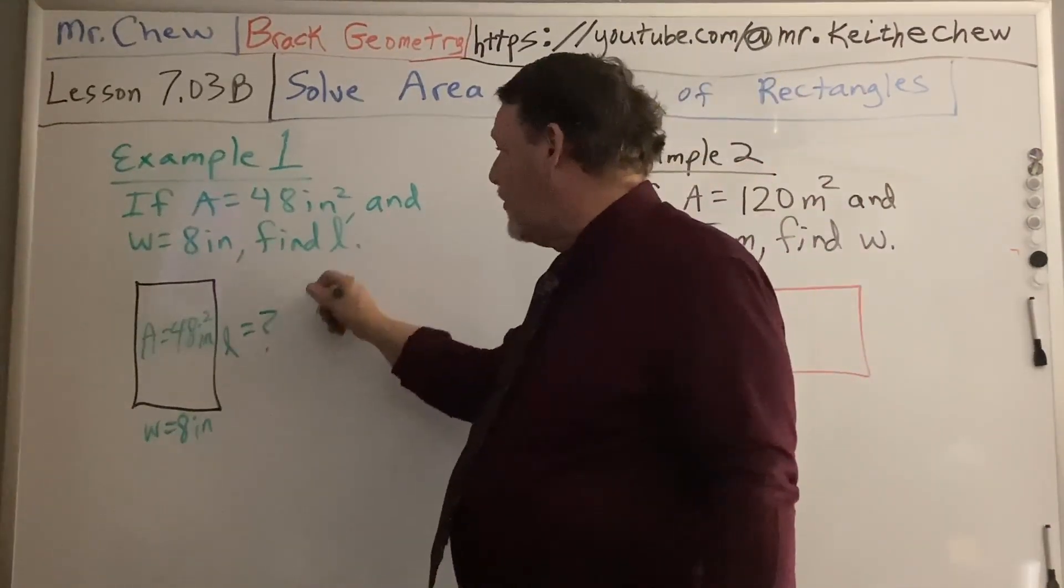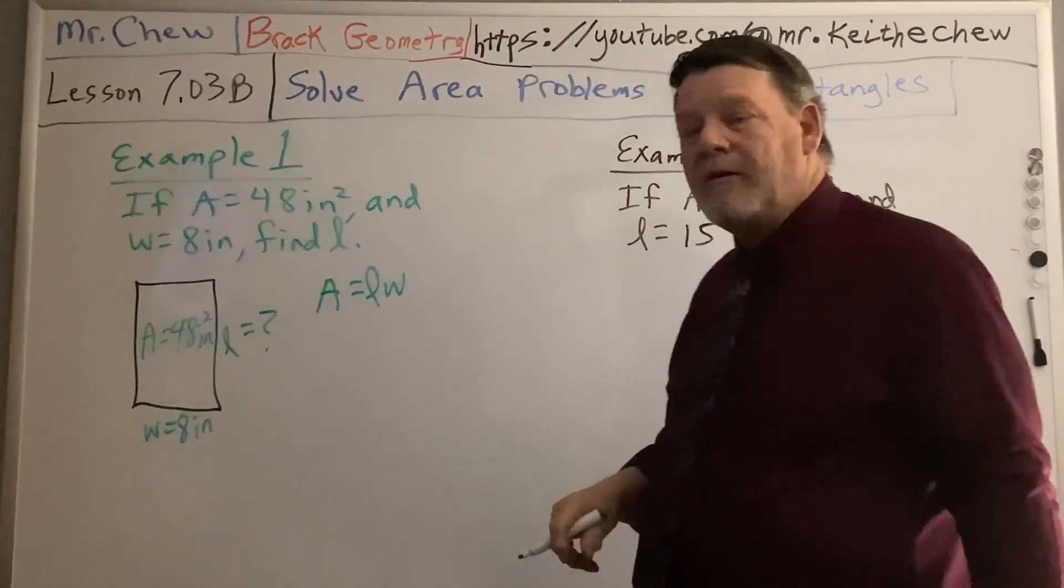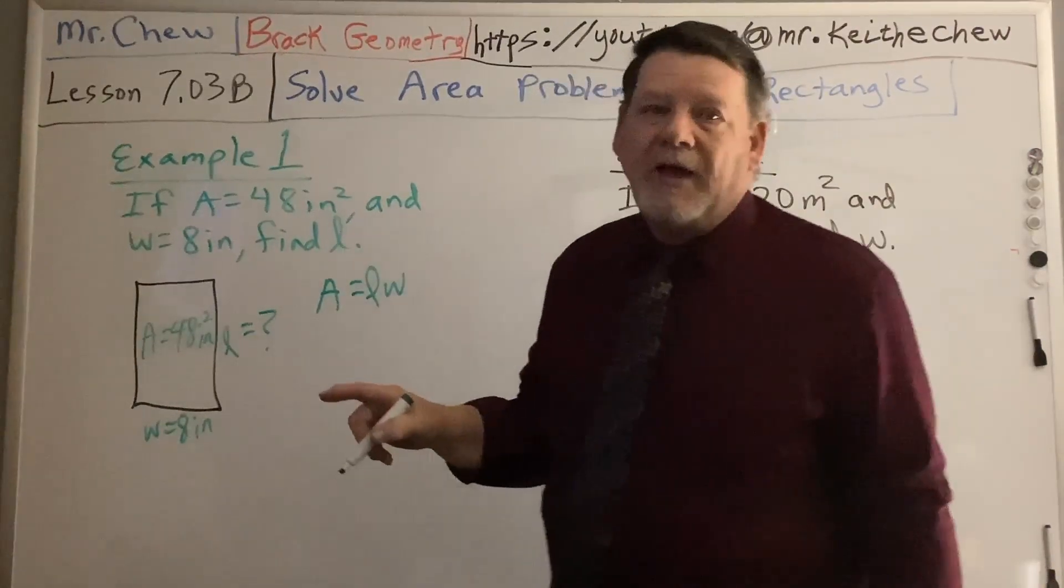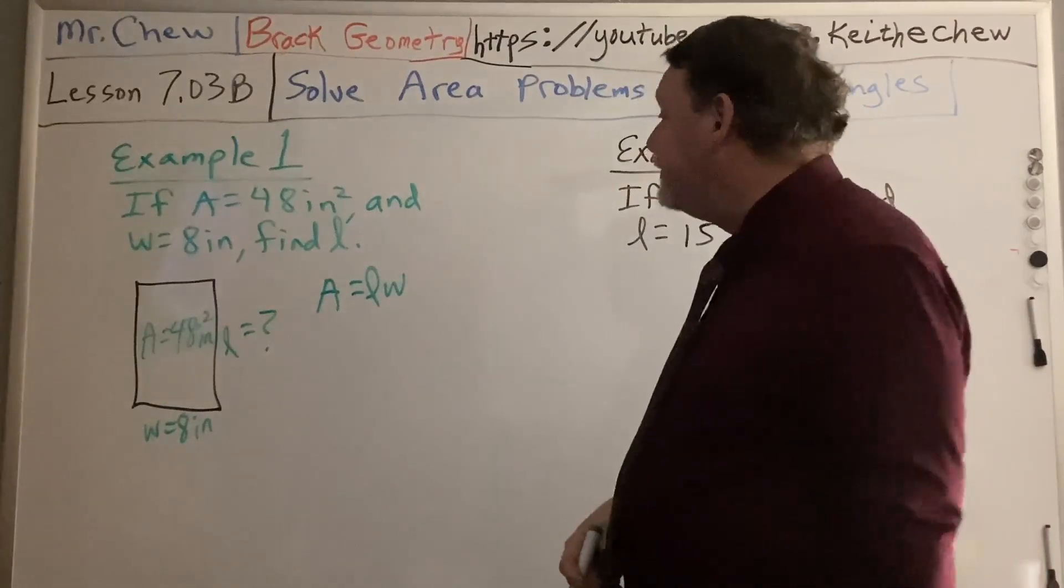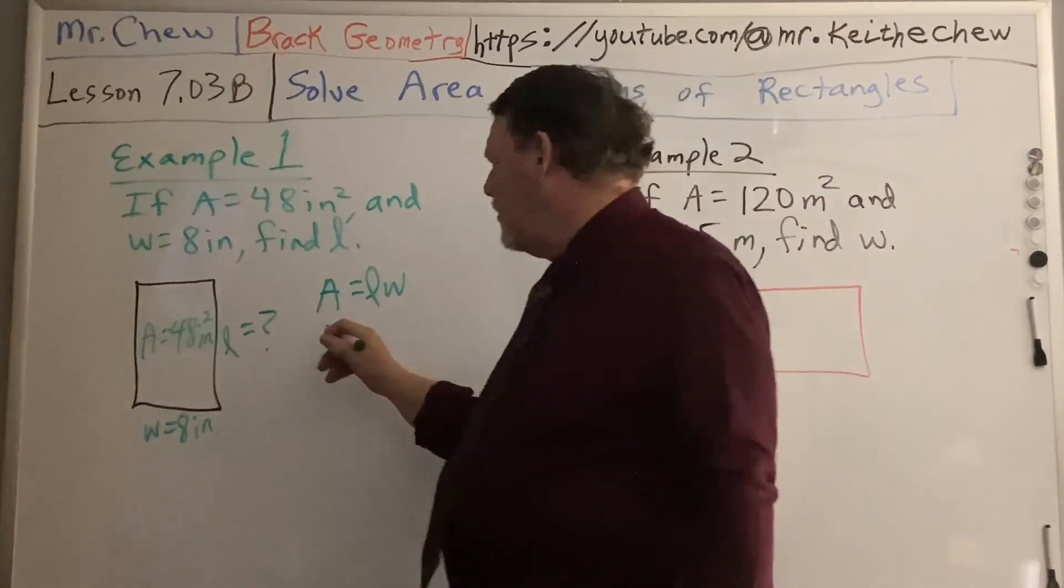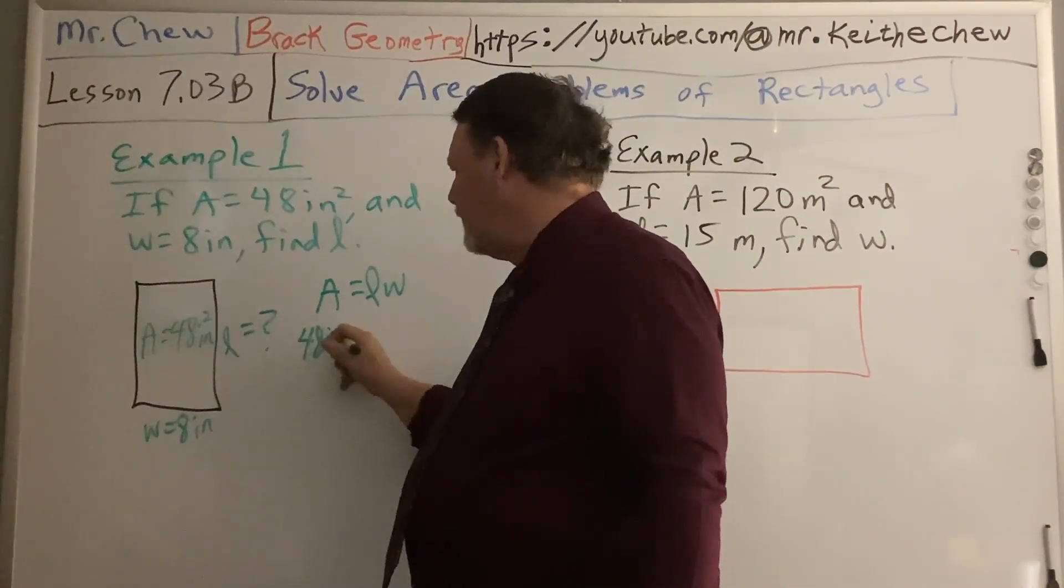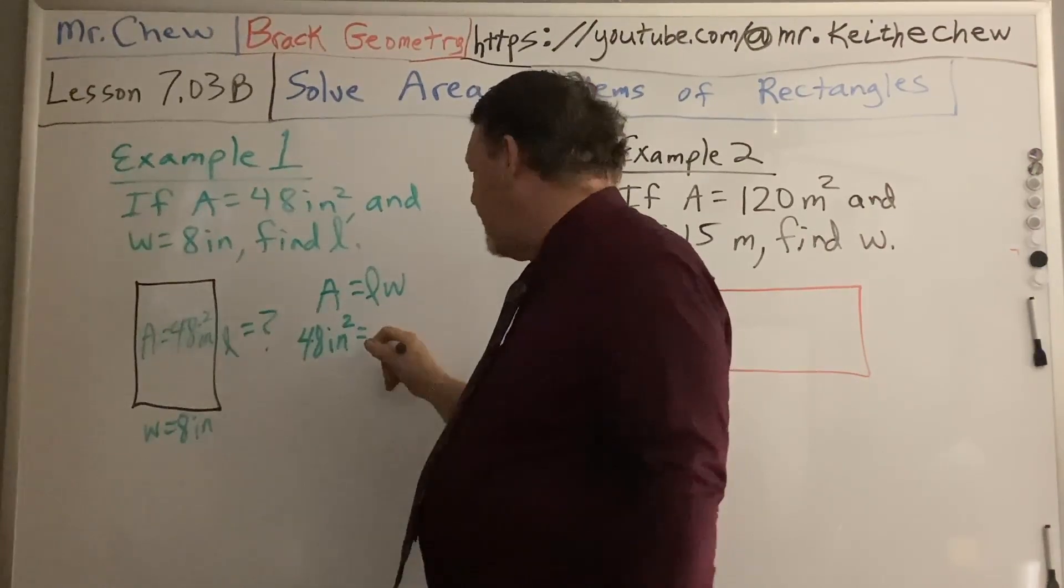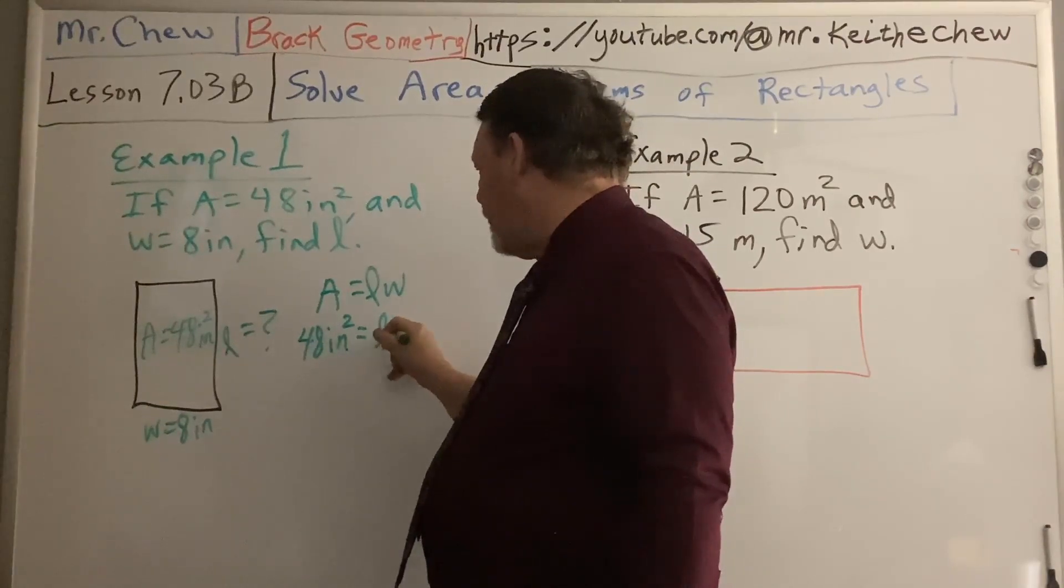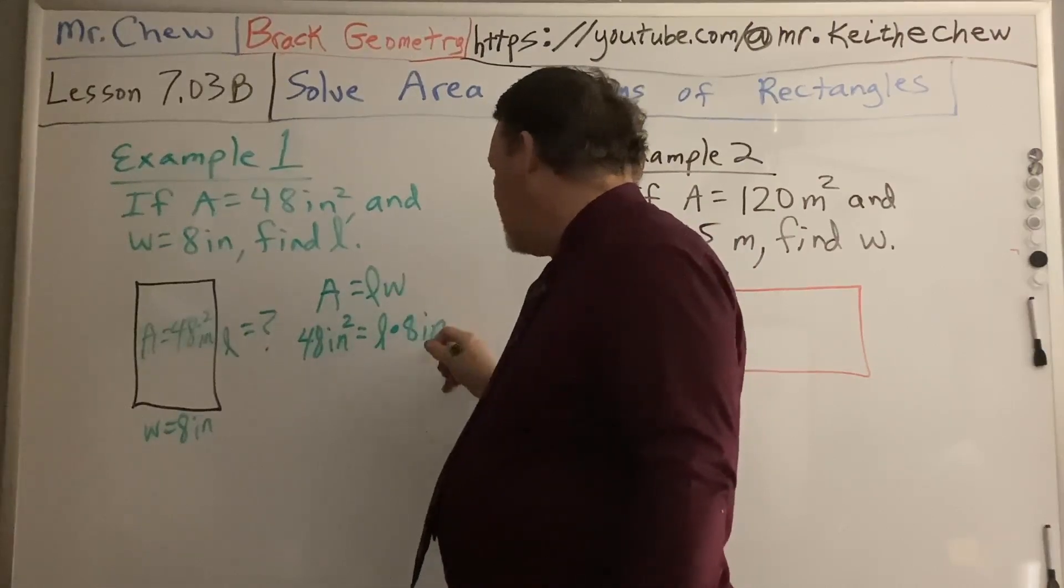So you have to start out with your formula, and the area of a rectangle is the length times the width. I make my L's like that so that it doesn't look like a 1. And now we use the substitution property of equality, which area is 48 inches squared. I don't know what the length is, but I know what the width is.